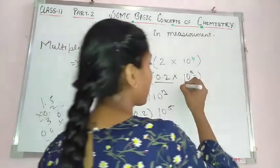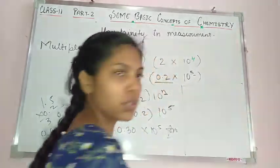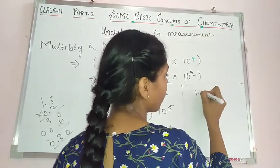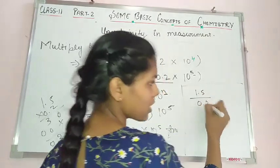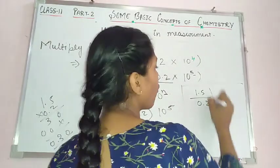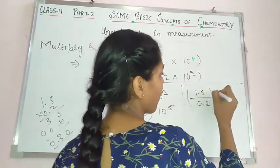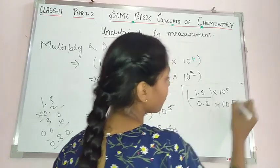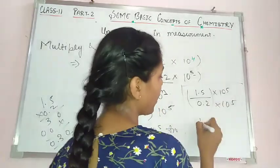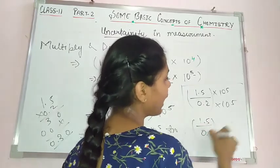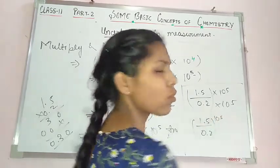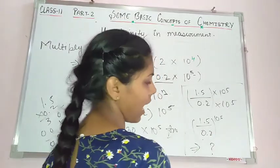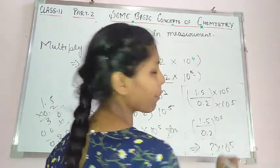For division: if we divide 1.5 by 0.2 when both have the same power of 10⁵, we keep 10⁵ as common and divide the coefficients. The answer is (1.5 ÷ 0.2) × 10⁵.